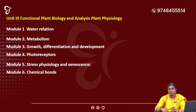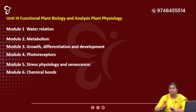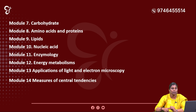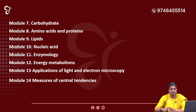Key topics in Unit 3: Water Relations, Metabolism — very important. Growth Differentiation, Photoreceptors, Stress Physiology and Senescence. Carbohydrates, Amino Acids, Proteins, Lipids — structures are very important, examples are important. Energy Metabolism is called out as essential. Previous questions and the overall scope of Unit 3 are important to cover.